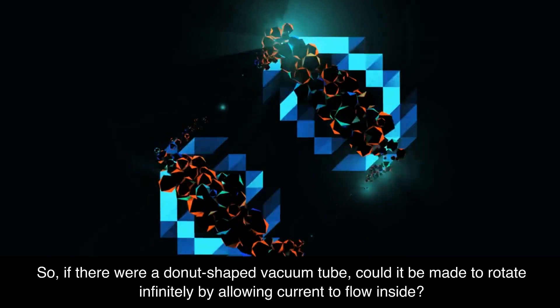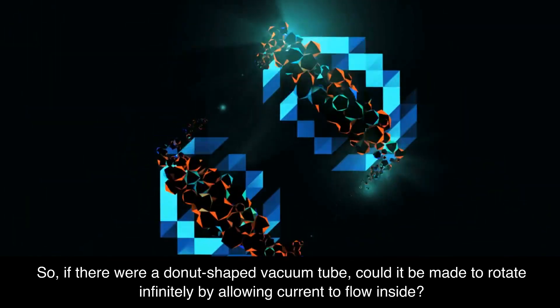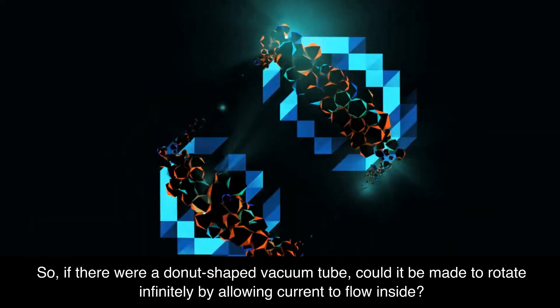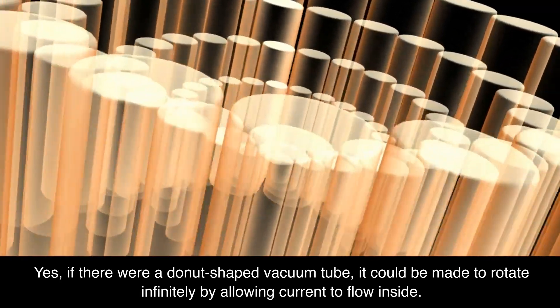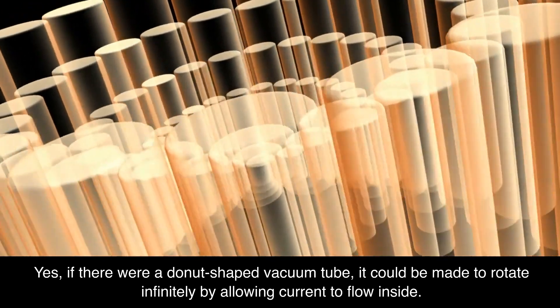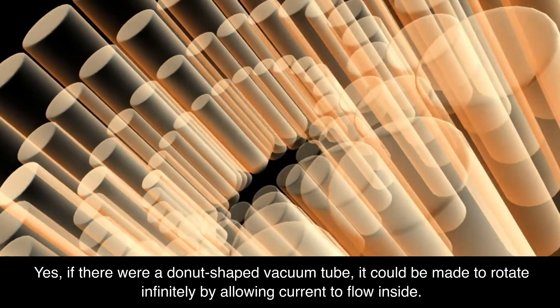If there were a donut-shaped vacuum tube, could it be made to rotate infinitely by allowing current to flow inside? Yes, it could be made to rotate infinitely by allowing current to flow inside.